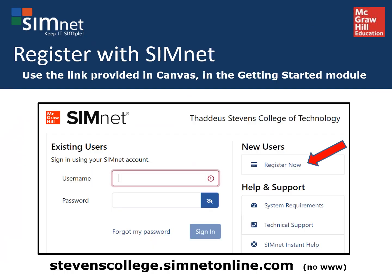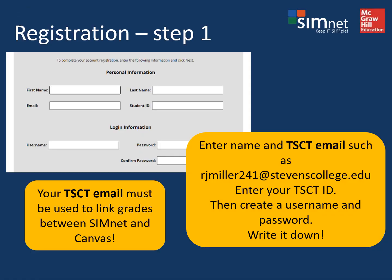To register for SimNet, use the link provided in your Canvas course in the Getting Started module. At this screen, click where it says register now for new users. Here you'll enter your name for your SimNet account and make sure you're using your Thaddeus Stevens email, otherwise you won't be able to link your grades between our school Canvas system and SimNet.